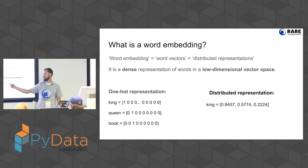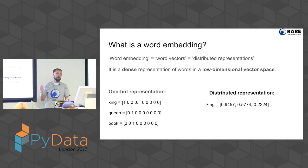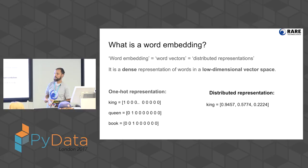Today we're going to find algorithms which give me good numbers — like, why is 0.94 a good number for king? We're going to talk about how to construct this kind of representation.